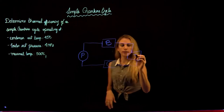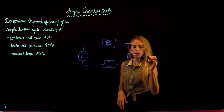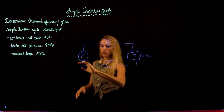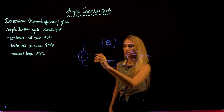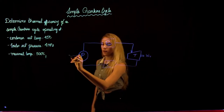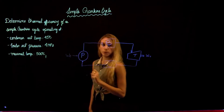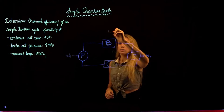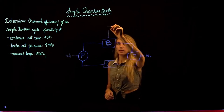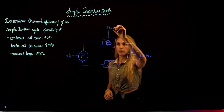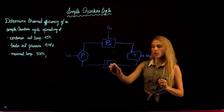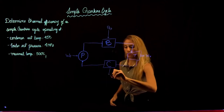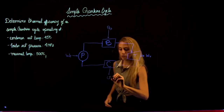The turbine is going to create a work output, so we're going to call that W_T. In the pump, in order to have the fluid go from low to high pressure, we're going to need a work input, which we're going to call W_P. In the boiler, we're heating up our fluid, so that means we're going to have heat in, which we're going to call Q_B. And in the condenser, we are removing heat to go from vapor to liquid phase, so we're going to have Q out, which we're going to call Q_C.